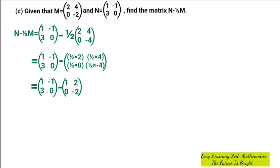Now I can subtract. Remember, when you're subtracting matrices, what you subtract is corresponding elements — each corresponding element is subtracted from the corresponding element. So equal to: 1 corresponds with positive 1, so it's going to be 1 minus 1. Then negative 1 minus 2. Then coming down: 3 minus 0. And then 0 minus negative 2. Then close bracket.